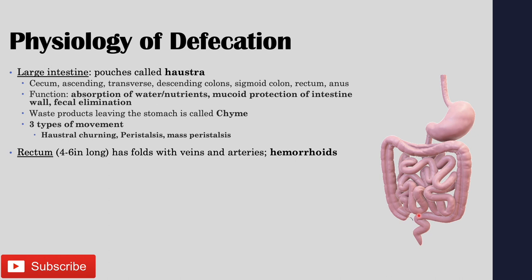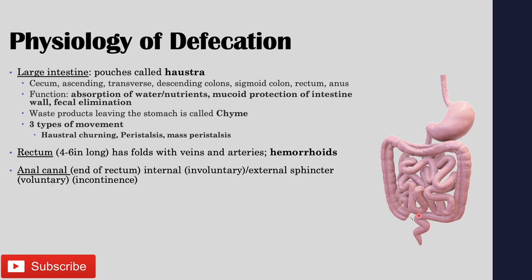Keep in mind that you can also get tarry stool whenever you have bleeding further up the digestive tract. If there's bleeding in the small intestine or the transverse colon, it will come out as tarry stool, meaning the stool would be black. You can also get tarry stool from medications like Pepto-Bismol.